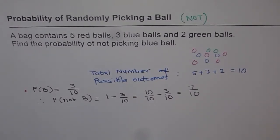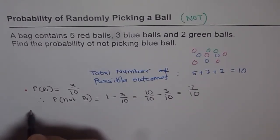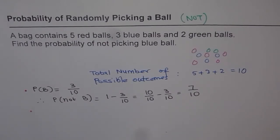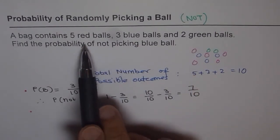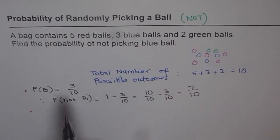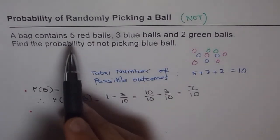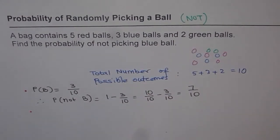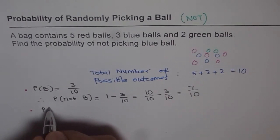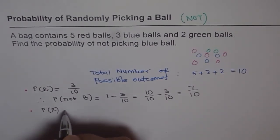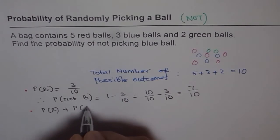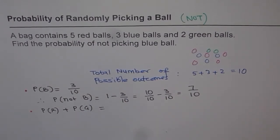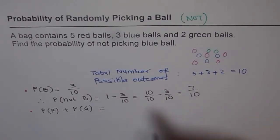Let me show you another way of doing the same thing. The alternate way is: in this particular case, we have three kinds of balls — red, blue and green. So if you don't pick blue, what will you pick? You will pick either red or green. So what we can do is find probability of picking red plus probability of picking green, add them up, and get the answer.